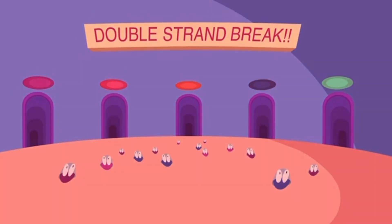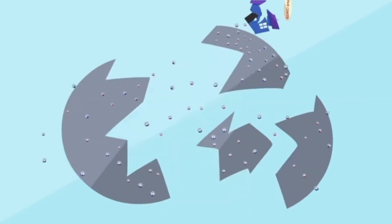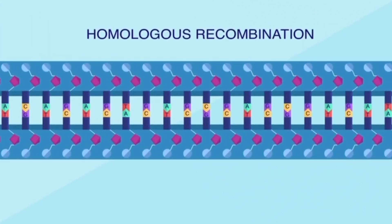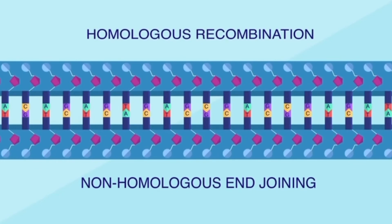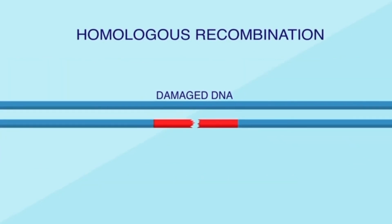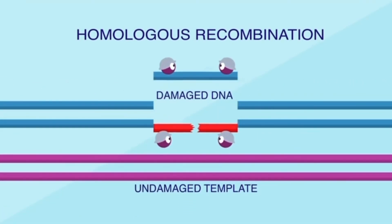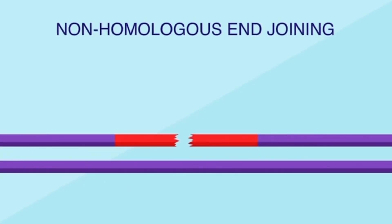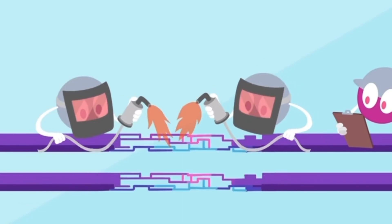The two most common pathways for repairing double strand breaks are called homologous recombination and non-homologous end joining. Homologous recombination uses an undamaged section of similar DNA as a template. Enzymes interlace the damaged and undamaged strands, get them to exchange sequences of nucleotides, and finally fill in the missing gaps to end up with two complete double-stranded segments. Non-homologous end joining, on the other hand, doesn't rely on a template. Instead, a series of proteins trims off a few nucleotides and then fuses the broken ends back together.